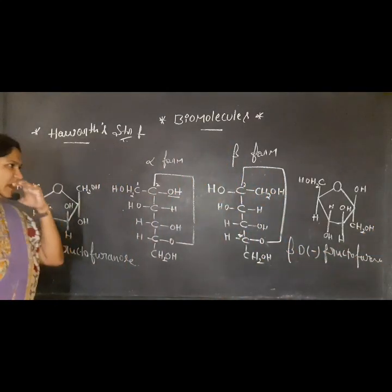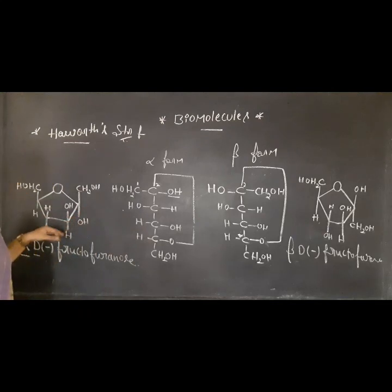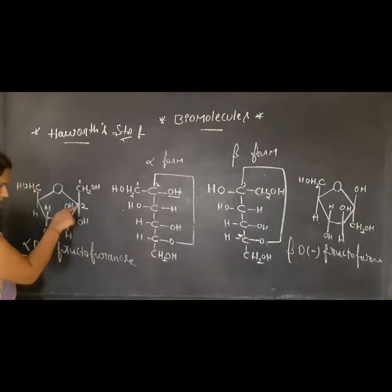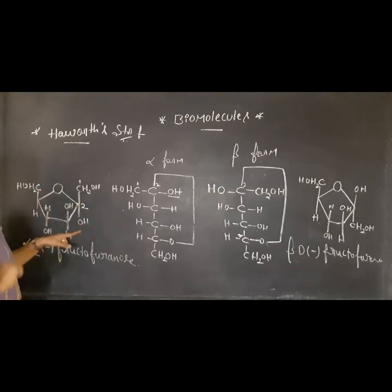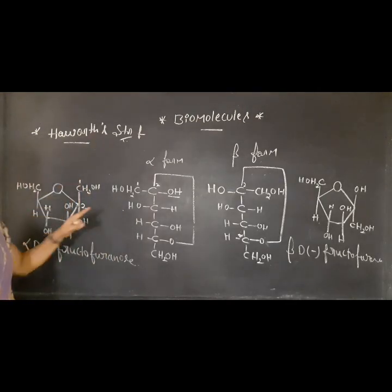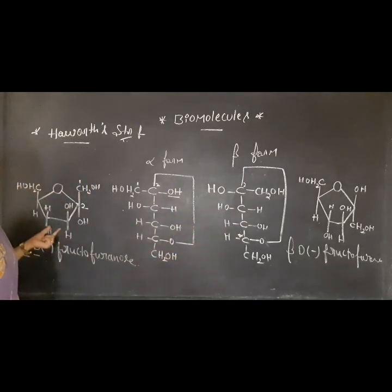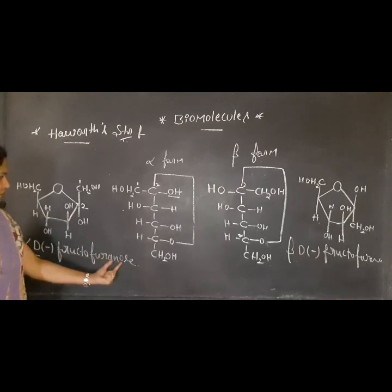If you observe carefully, alpha and beta structures are very similar. The difference is only at the first or second carbon position. The rotation changes — in one position OH may be with the CH2OH, giving the beta structure. In the examination, you will be asked to write the Haworth structure of fructose. You have to write these structures — they carry two marks and are very important.